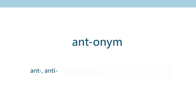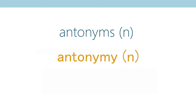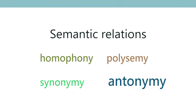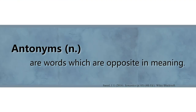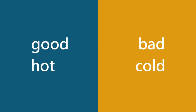What are antonyms? We have 'ant' or 'anti' meaning opposite, and 'onym' meaning word or name. So antonym literally means a word that is the opposite. In semantics, you can also say 'opposites.' When you have antonyms, you have a situation of antonymy, and the words are antonymous. Antonymy is a semantic relation between words — antonyms are words which are opposite in meaning. Examples include good and bad, hot and cold, or old and young.